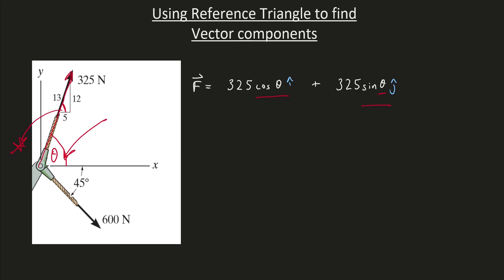With that being said, the cosine of theta is going to equal the adjacent over hypotenuse, so 5 over 13. And the sine of this angle is going to equal the opposite over the hypotenuse, 12 over 13.